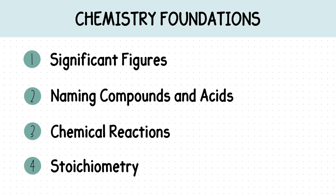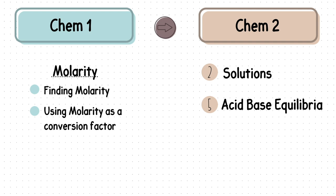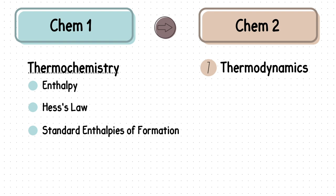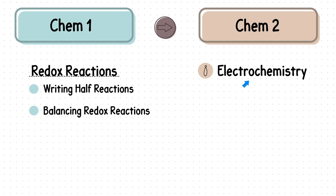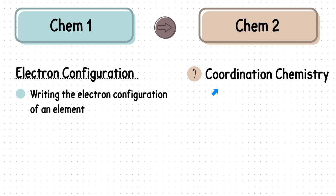Besides these chemistry foundations, here are the Chemistry 1 topics you will use in Chemistry 2. Molarity for two different chapters, solutions, and acid-base equilibria. Thermochemistry for thermodynamics. Redox reactions for electrochemistry. And writing electron configurations for coordination chemistry. Note, not all classes cover coordination chemistry.